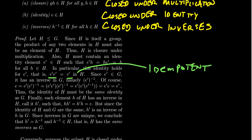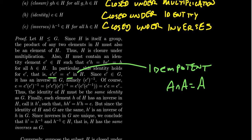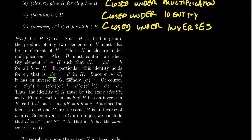Idempotents are something we see with sets all the time — like the intersection of a set with itself, or the union of a set with itself. In a group, an identity element is idempotent. But in a group, the only idempotent element is the identity itself. This is going to be the key point here.